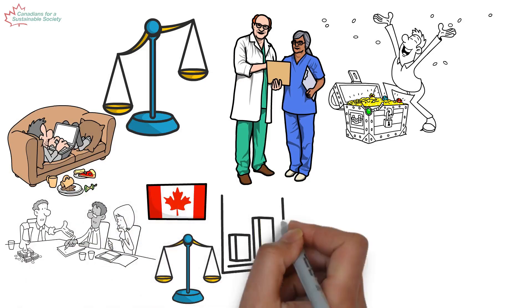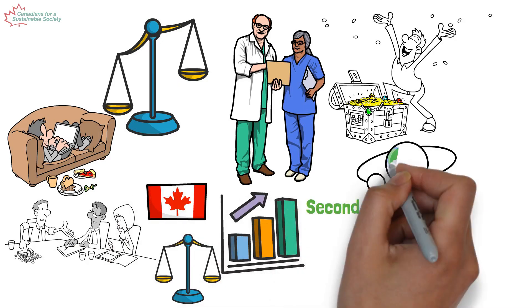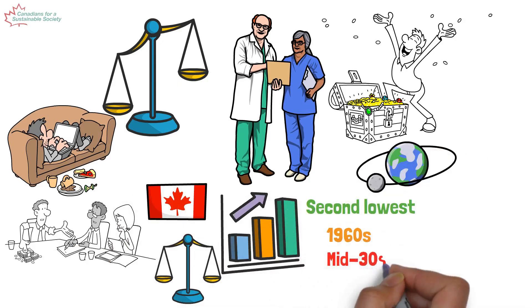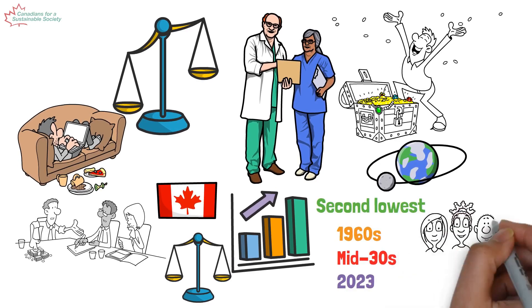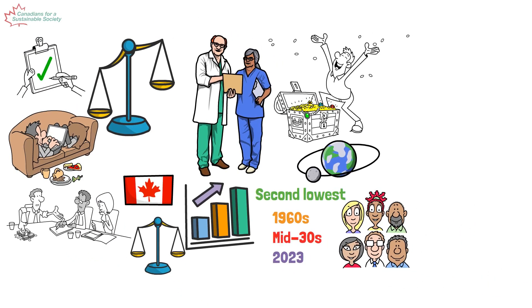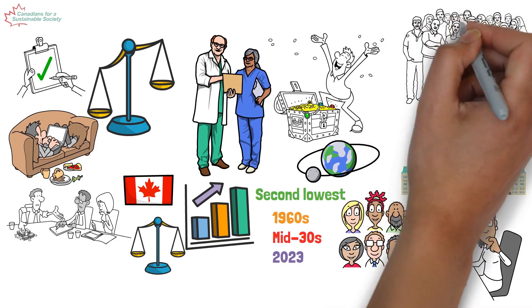Canada's inequality ranking has risen from the second lowest in the world in the 1960s to the mid-30s in 2023. Higher levels of equality should be a national priority. Why did governments stop caring about Canadians?